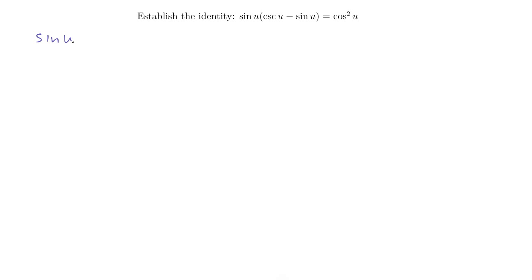Let's write down sine u times the quantity cosecant u minus sine u. Now we want to figure out what that's equal to, but we do not yet say that it is cosine squared u. That only comes at the end. So what can we do with this?